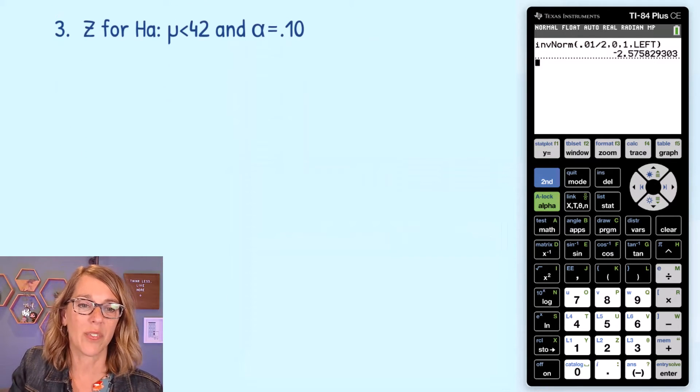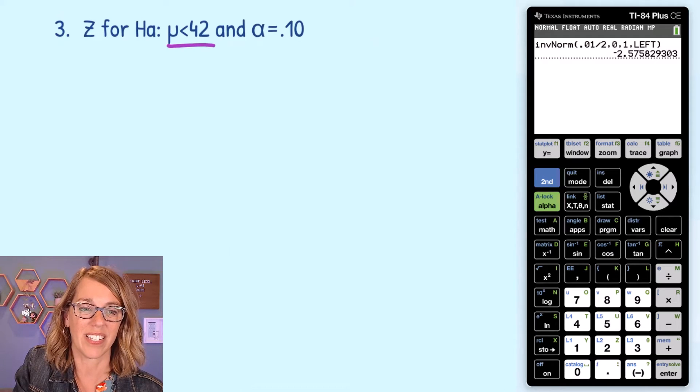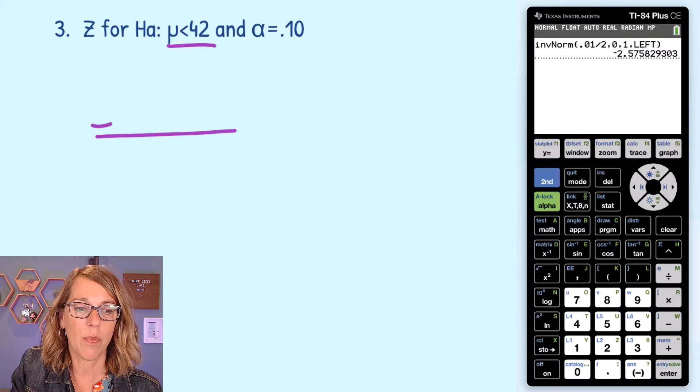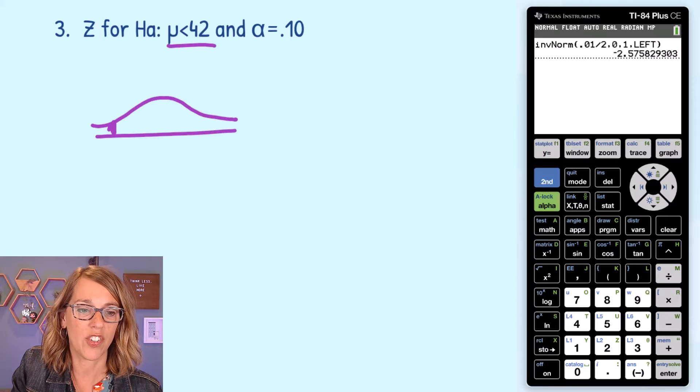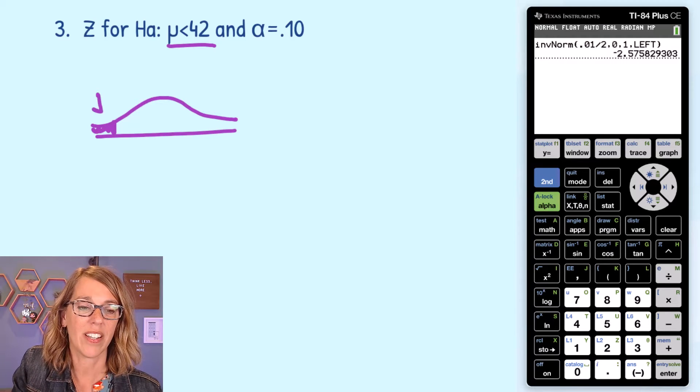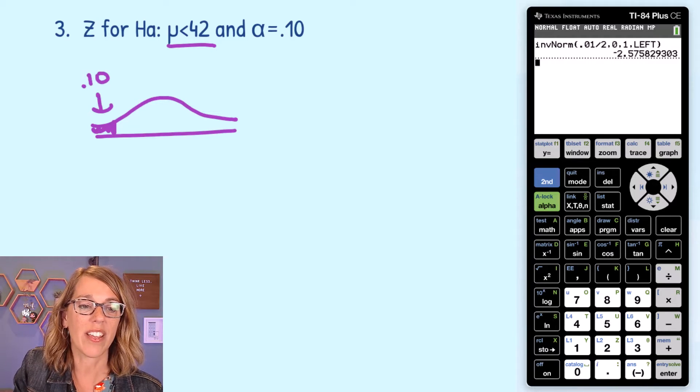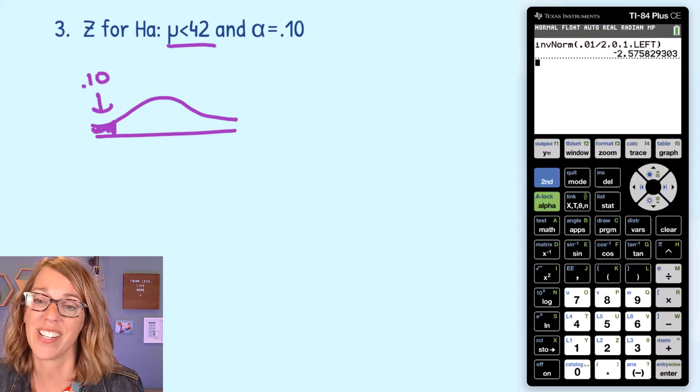On this last one for a z-score, I've got a less than symbol. That less than symbol points to a rejection region on the left. This rejection region has an area this time of 0.10.